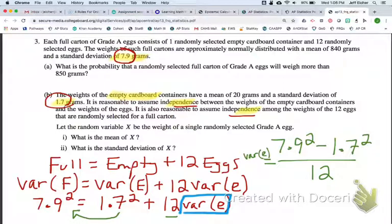So we would square root both sides. So the standard deviation of one egg is one big square root of 7.9 squared minus 1.7 squared, all over 12.